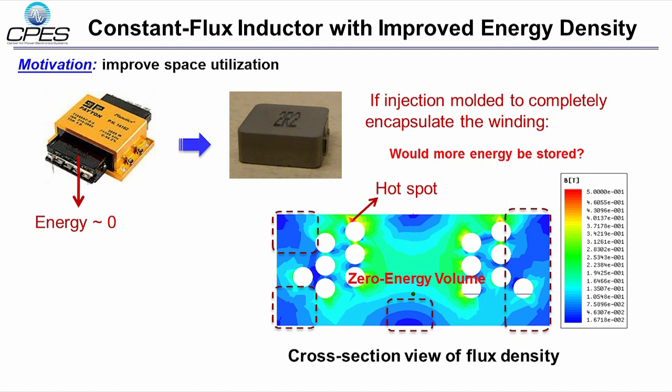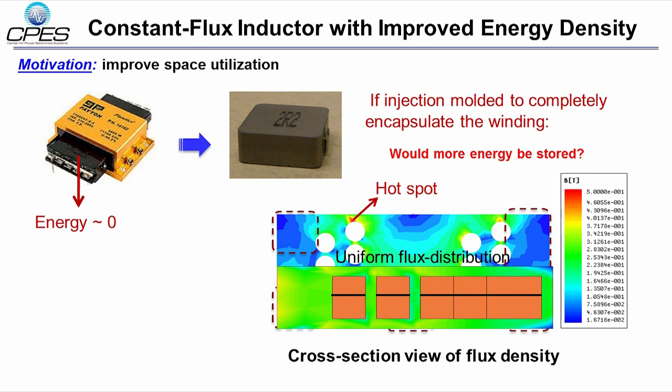Therefore, we found a chance for improvement if we can turn the red color and blue color all into green, or say to have constant flux distribution inside the core. Then the magnetic material is fully utilized to store the energy. For the same inductance and resistance, the total volume can be reduced significantly.